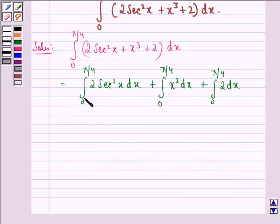Now, we see that integral of secant square x is tan x, so we have 2 tan x with limits 0 to pi by 4, plus integral x cube dx is x raised to power 4 by 4.